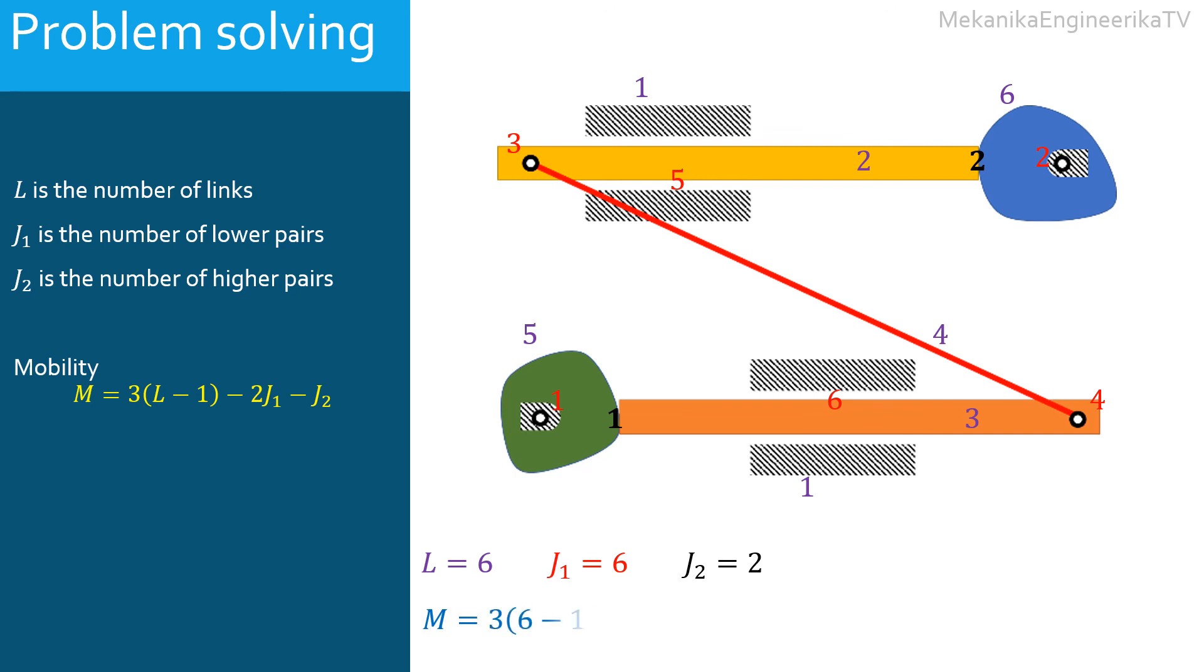Substituting the value of L, J1 and J2 in the equation of mobility gives M is equal to 1.